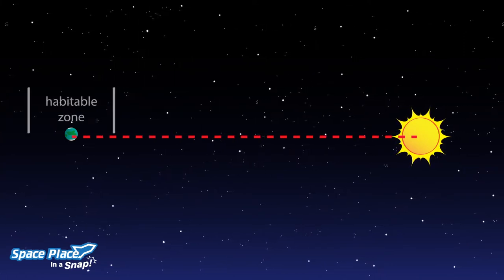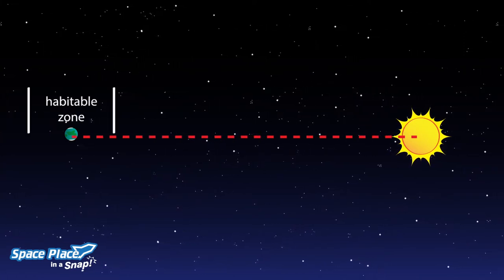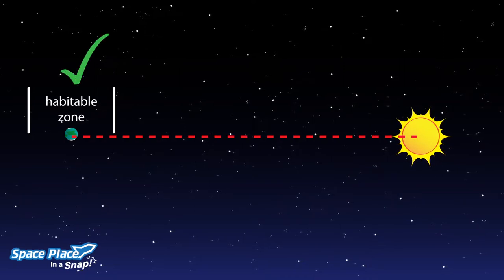We call this distance the habitable zone. It's where the temperature of the planet would be similar to Earth.